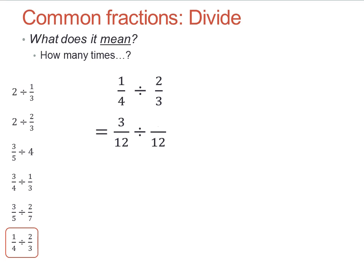So now I've got three-twelfths divided by eight-twelfths, which is just three divided by eight. Three-eighths.